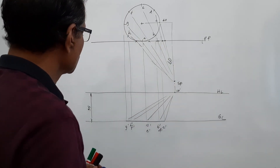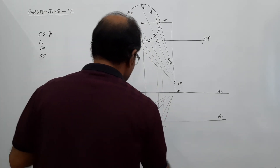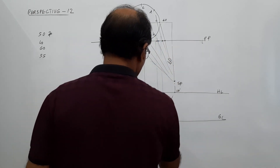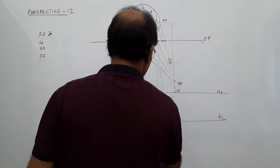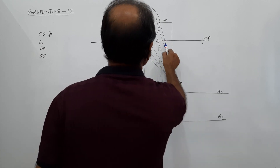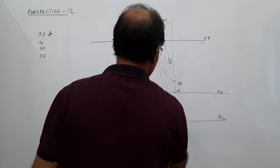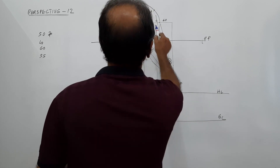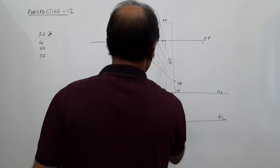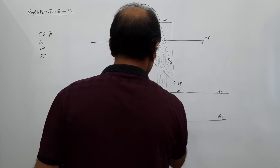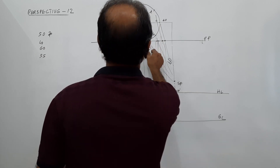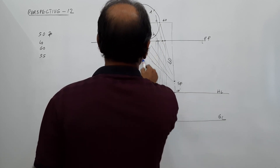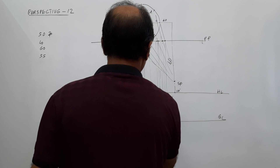A is on the picture plane line itself, so this is A with no doubt. Drop the intercept of B — this is capital B. This is the intercept of C — capital C. This is the intercept of D — capital D. This is the intercept of E — capital E. Intercept of F — capital F. And G.